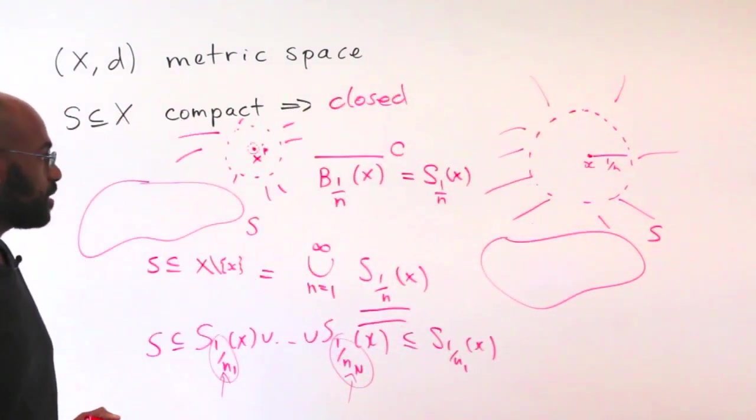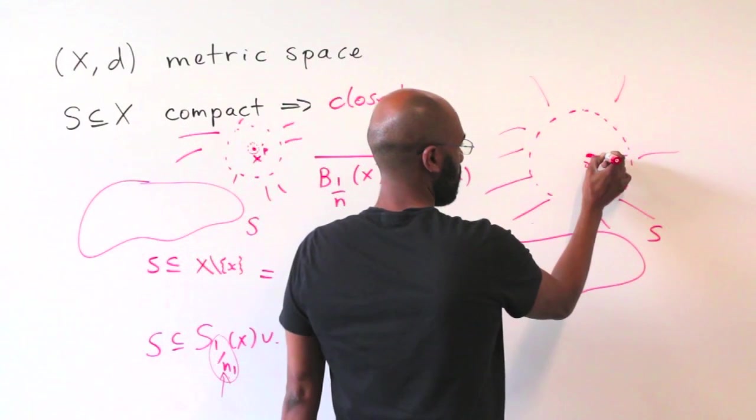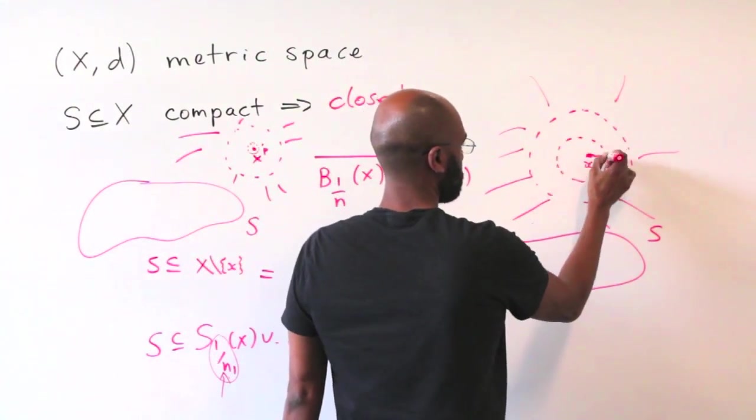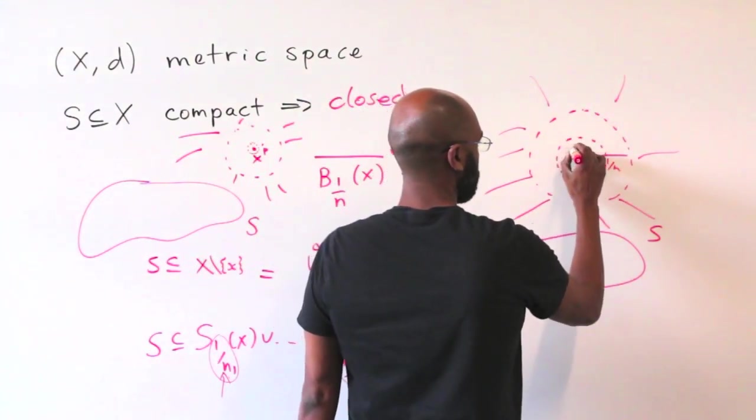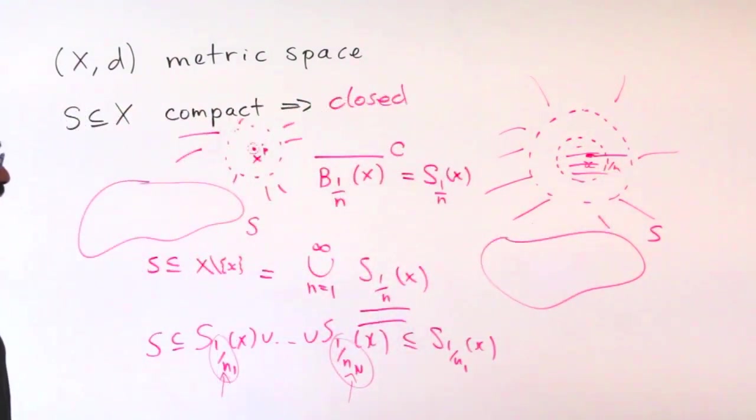Okay, great. So what that means then is there is an open ball around X that sits outside of S. If we take a ball of radius half of this thing, then the open ball centered at X with that radius sits outside of S.